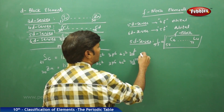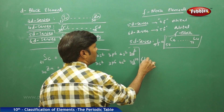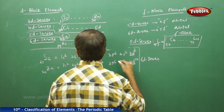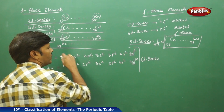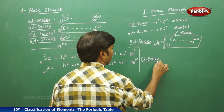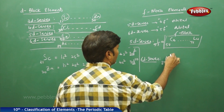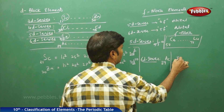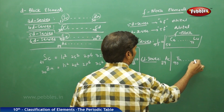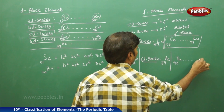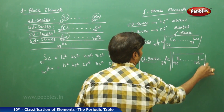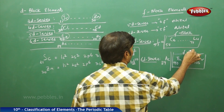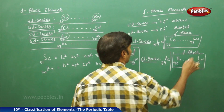Similarly, for the 6d series, starting with actinium (89), from thorium (90) to lawrencium (103), this set of elements also belongs to f-block.